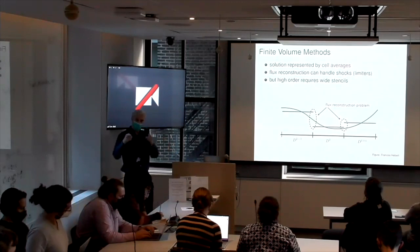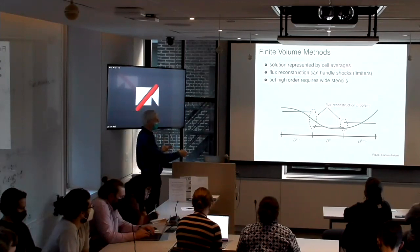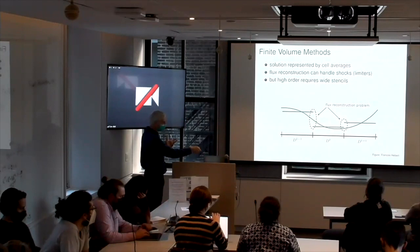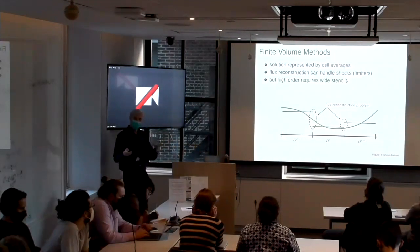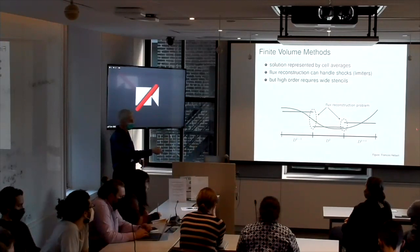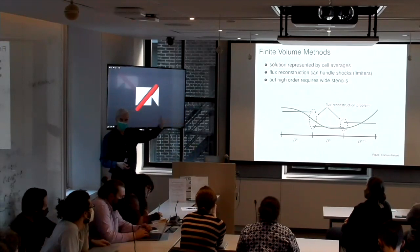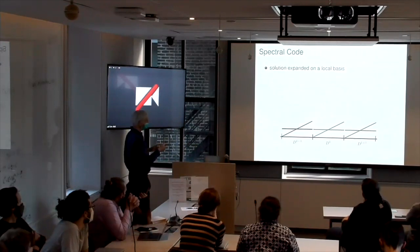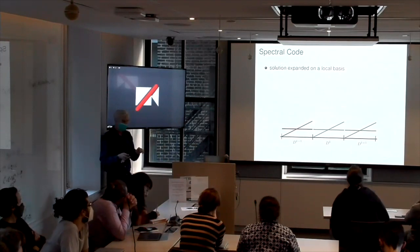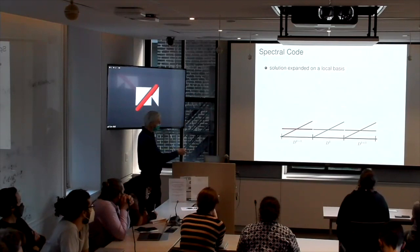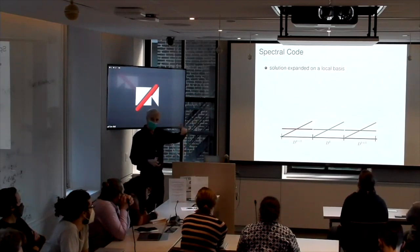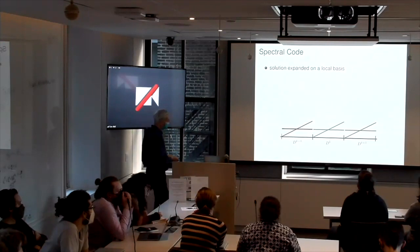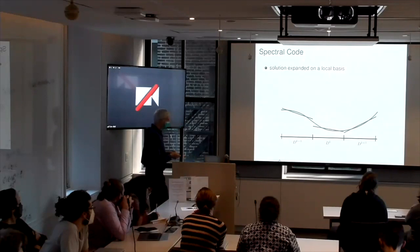The problem with this method is if you want high order, you only have one grid point here. So to get high order, you have to couple together. You have to get information from not just the nearest neighbor, but could be several neighbors away. And that hurts you when you try to, when these other cells might be living on different processes and you have to communicate information. That's a very slow part of the process. In a spectral code, the solution is expanded in a local basis. So here I've shown constant and x, a linear, right? The first two terms of a polynomial v0 and v1. But again, you've got higher order.